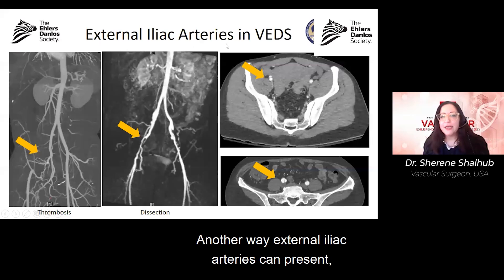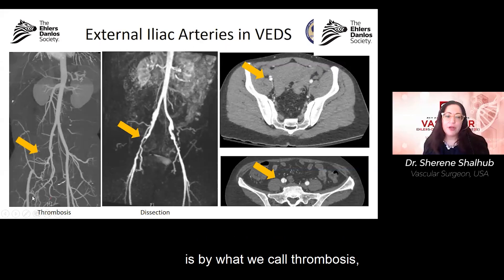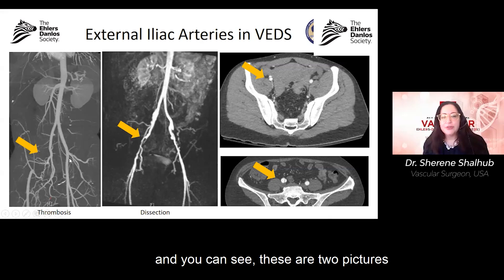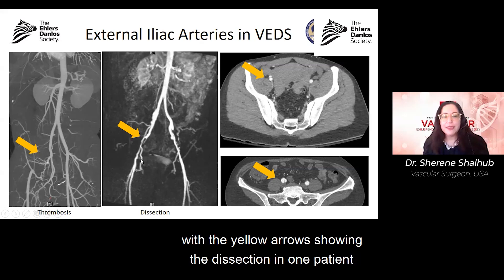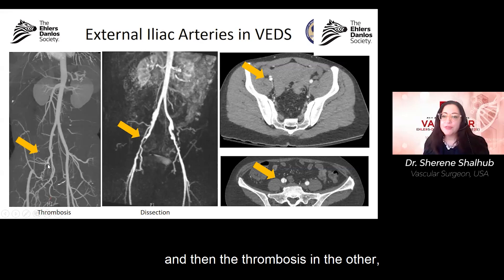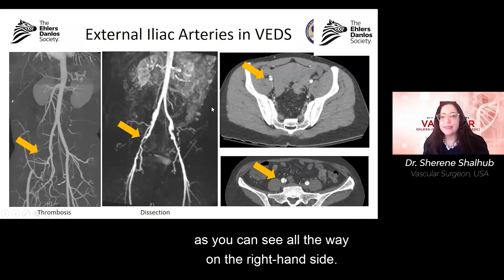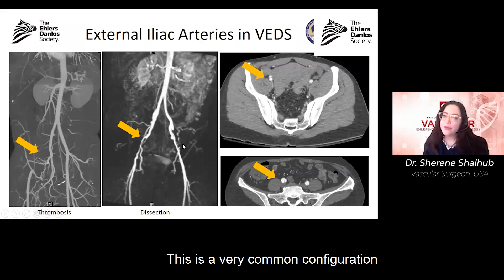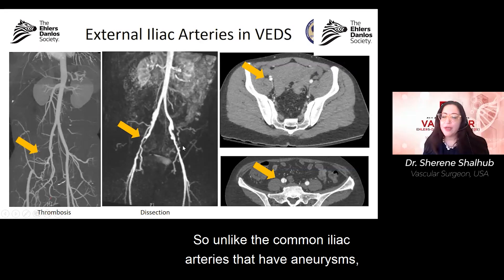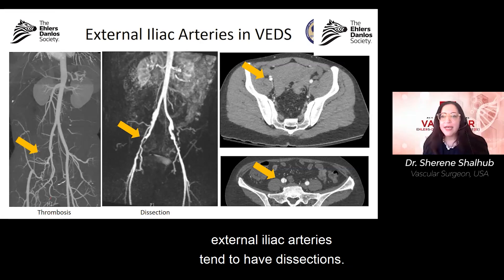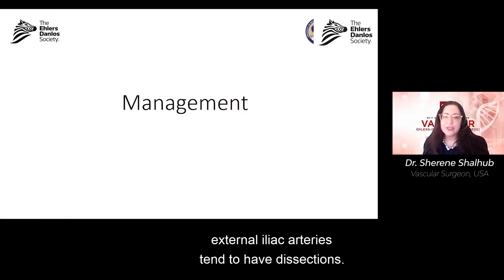Another way external iliac arteries can present is by thrombosis — meaning people can have a dissection, and you can see these two pictures with yellow arrows showing a dissection in one patient and thrombosis in another. Or you can have small dissection flaps, as seen on the right-hand side. Unlike the common iliac arteries that have aneurysms, external iliac arteries tend to have dissections.